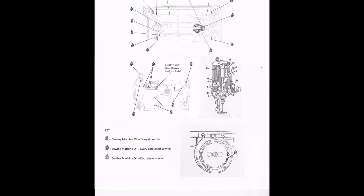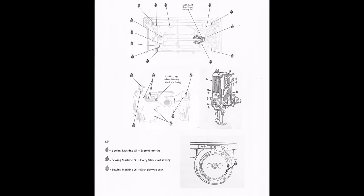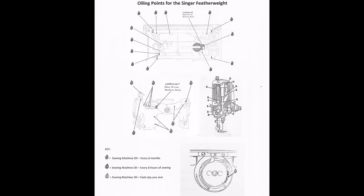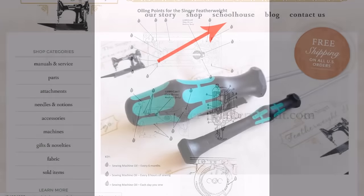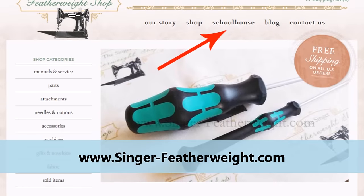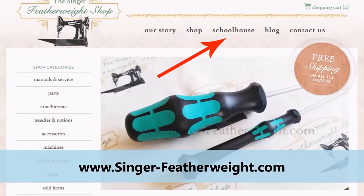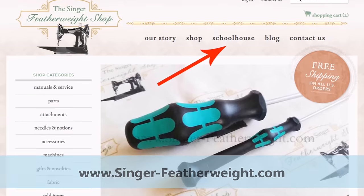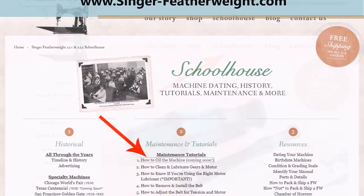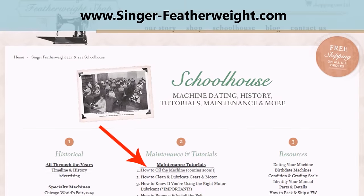Okay, before we get started, it would be a good idea to download and print our color-coded oiling chart, which can be found on our website, singer-featherweight.com, and then go to the schoolhouse section, maintenance and tutorials, how to oil the machine.